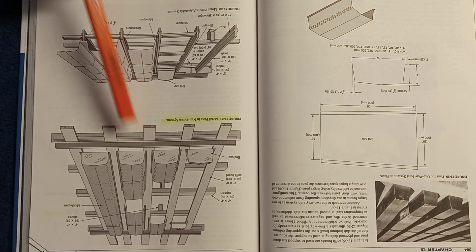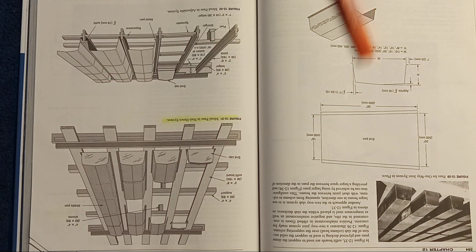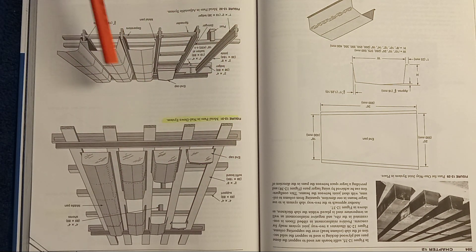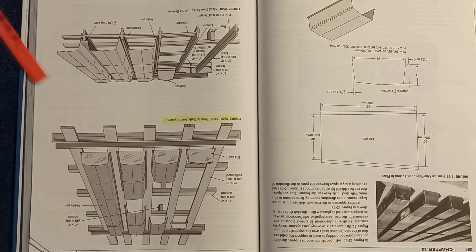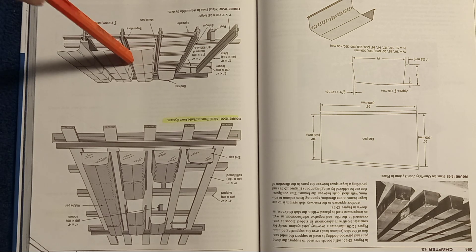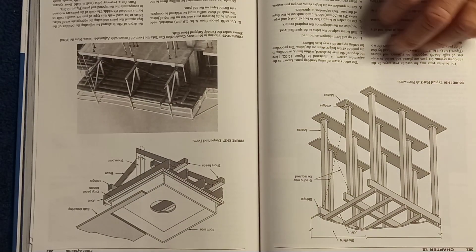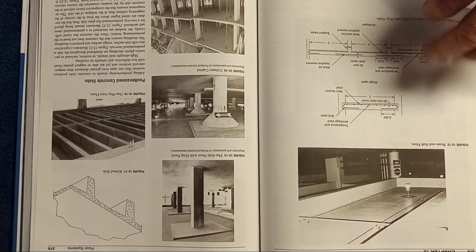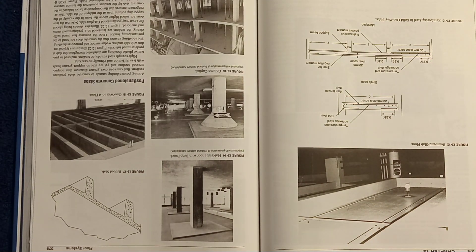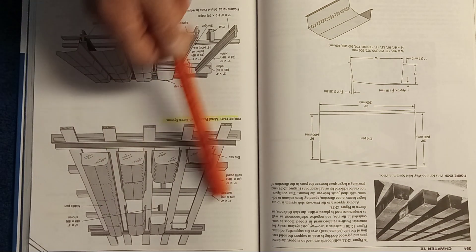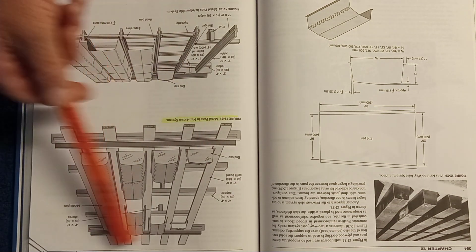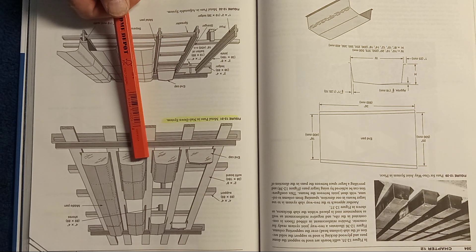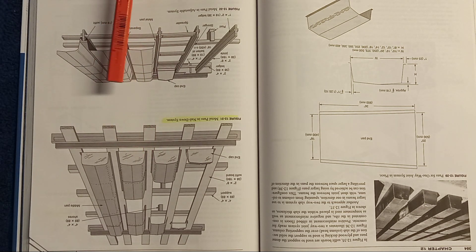On page 385, you've got these pans that you put down — these are forms. Then you're going to pour concrete on top and create these slabs. In the picture on page 385 there's a little flange. What you would have to do is nail that flange to the wooden support member. Then when you're done, you're going to rip all the forms out.